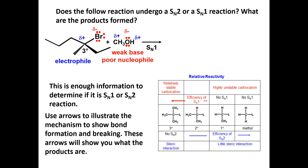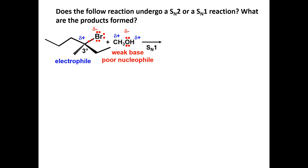Use arrows to illustrate the mechanism and show bond formation and breaking. These arrows will show you what your products are. The first step in an SN1 mechanism is the formation of a carbocation. Your first arrow shows the electrons from the carbon-bromine sigma bond moving to the bromine atom to produce the carbocation and the bromide ion.